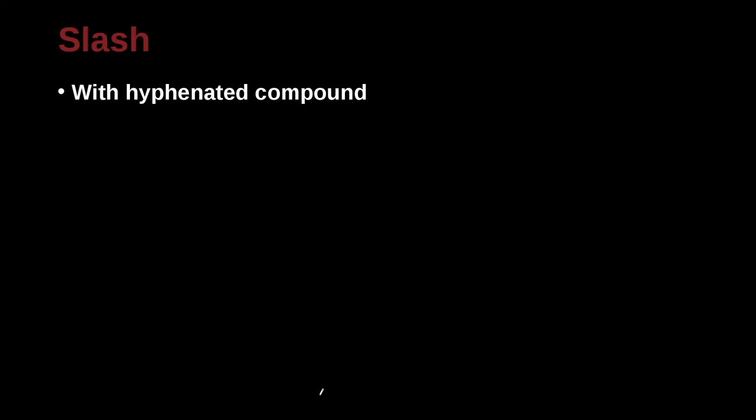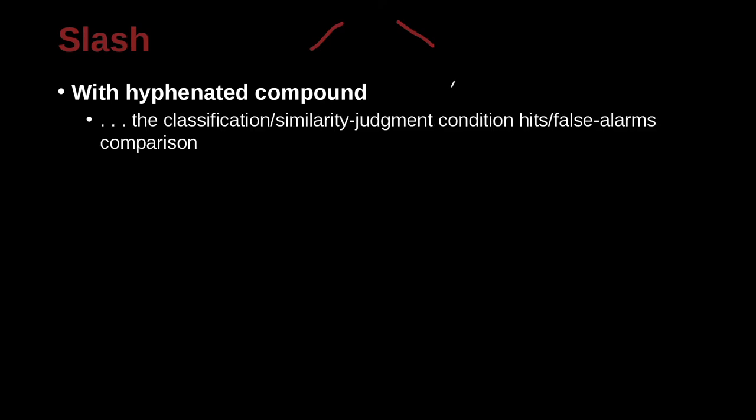Okay, a slash. So we're often used to using a slash because we use it in a slash or a backwards slash like this with web addresses and internet addresses. So when can we use a slash? Well, we use a slash when we're putting two words together, such as here, the classification slash similarity. There is no space before, no space after.